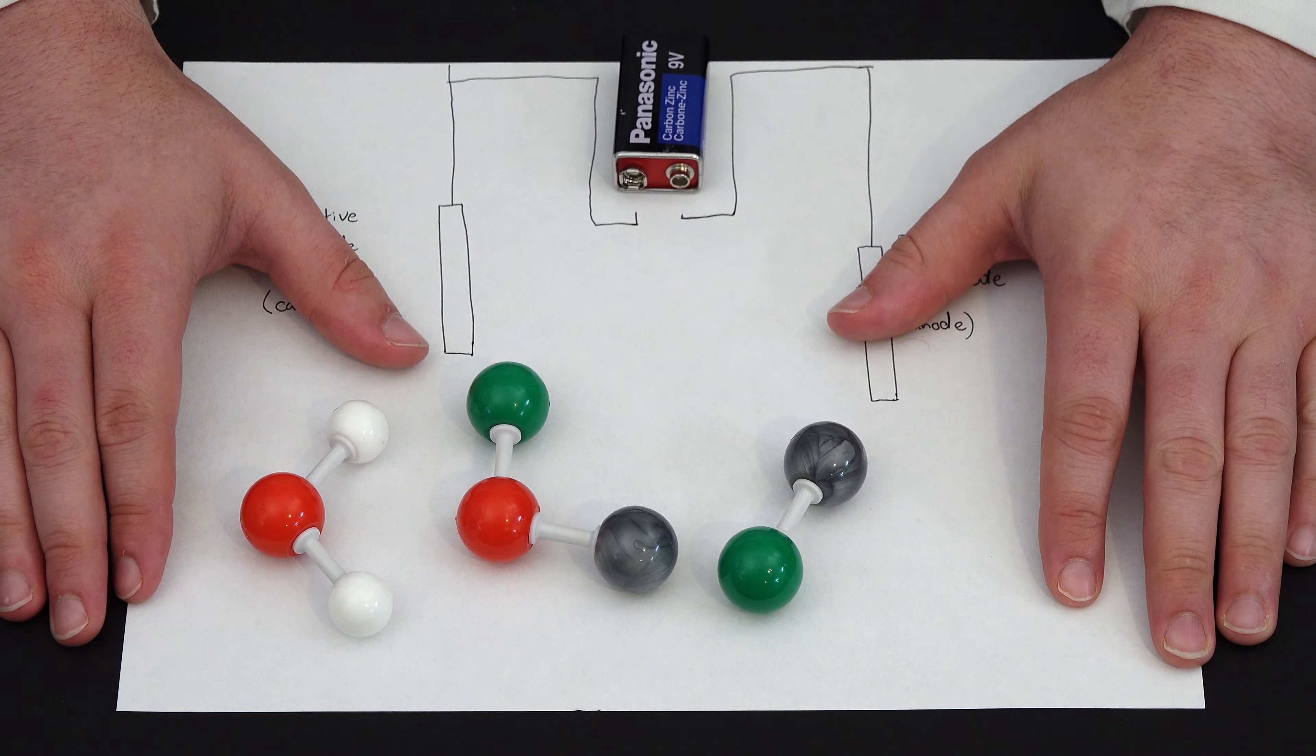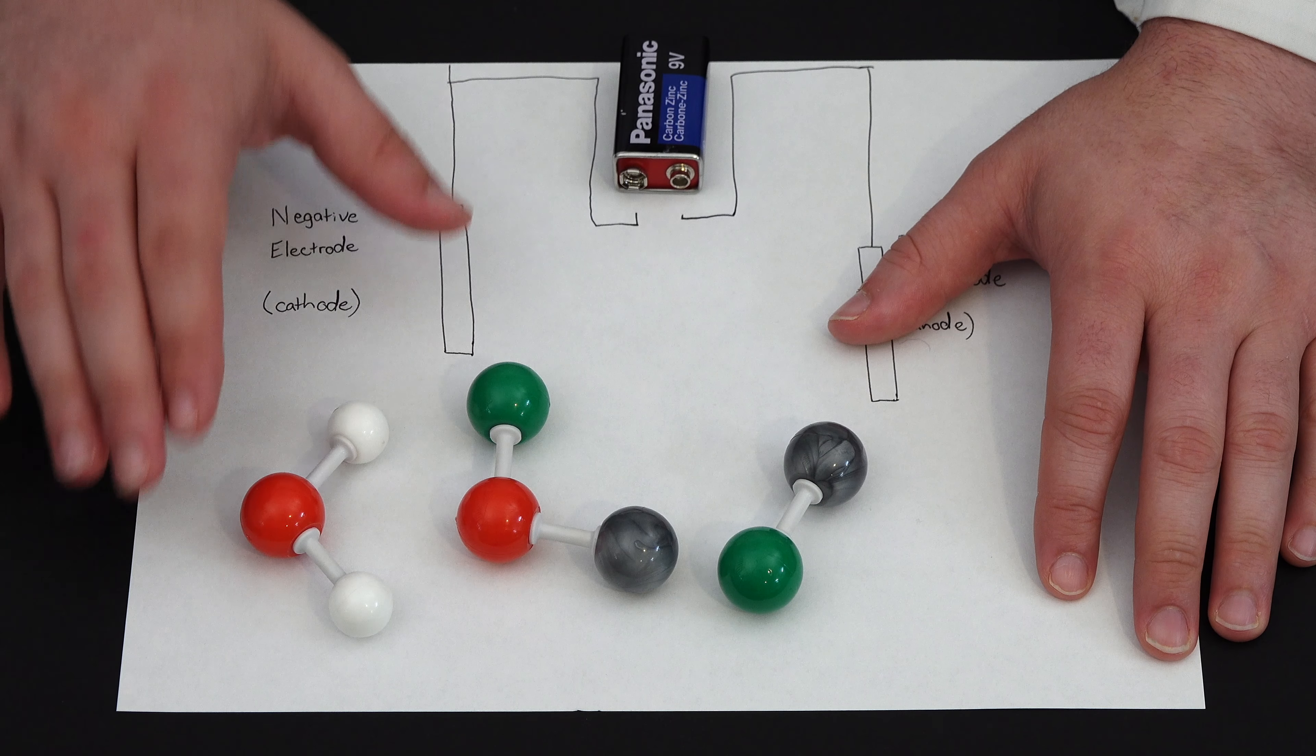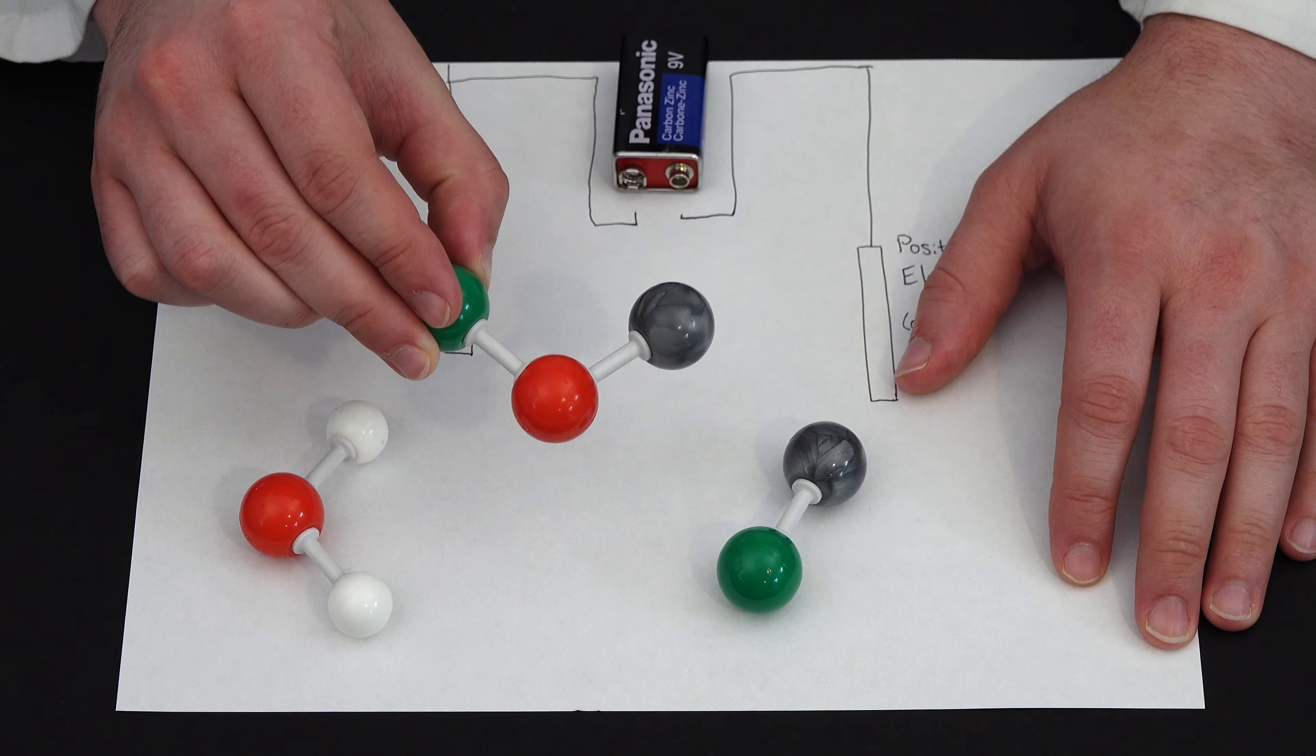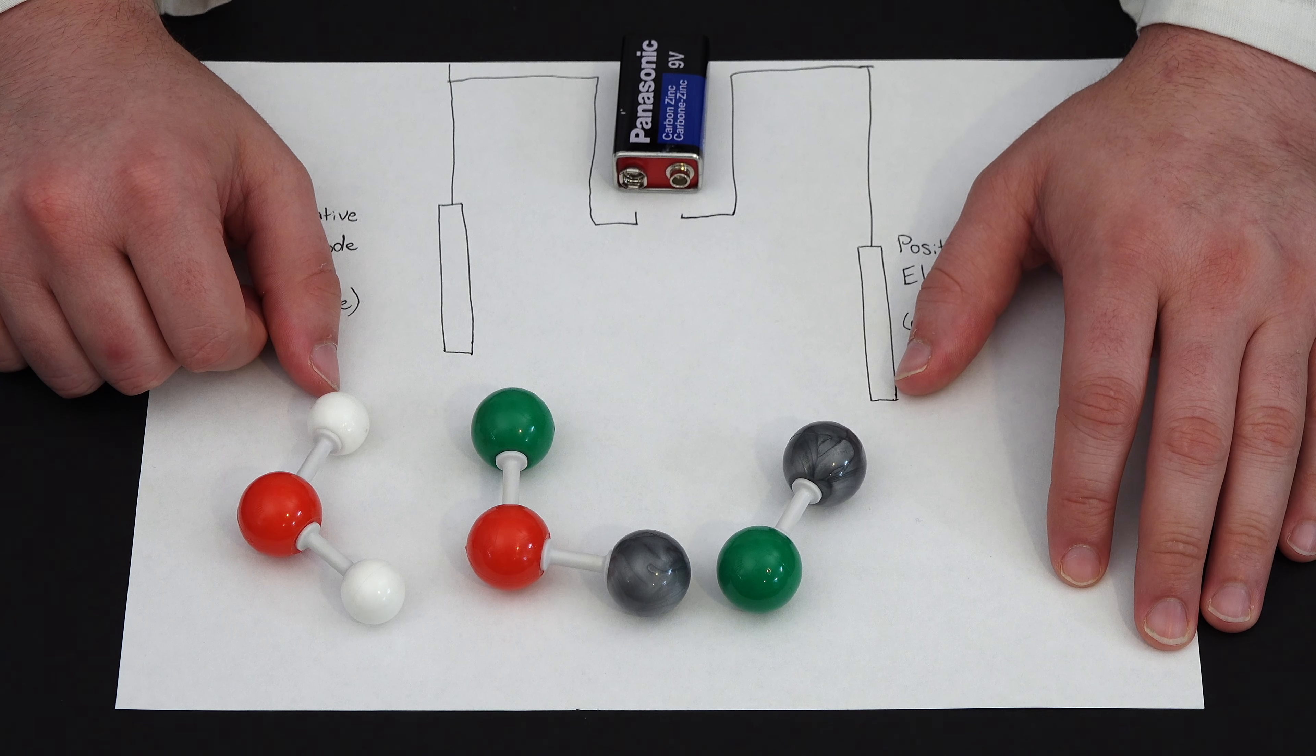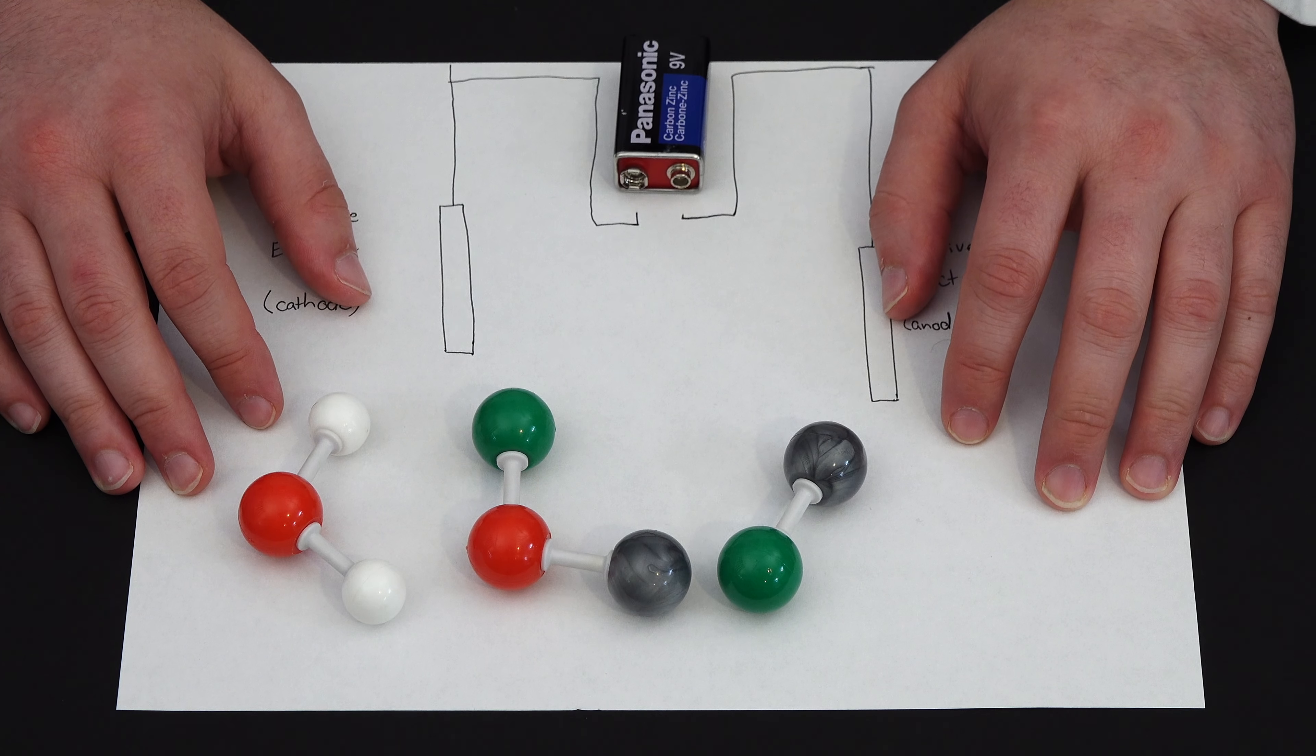So what happens when you electrolyze a salt solution is you produce sodium hypochlorite. This process has a special name. This is called the chloroalkali process. And it is used industrially to produce most of the world's supply of sodium hypochlorite, which you probably recognize as bleach. So this process where you electrolyze salt water is how we get most of our bleach.